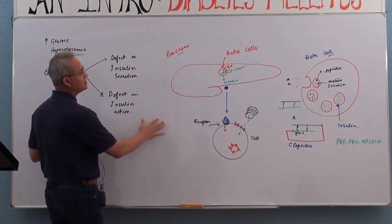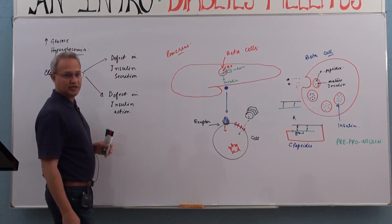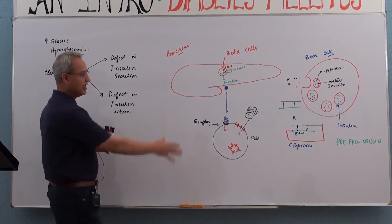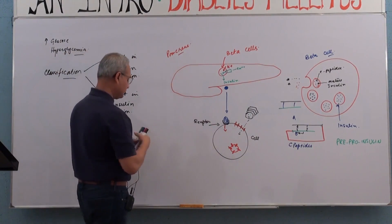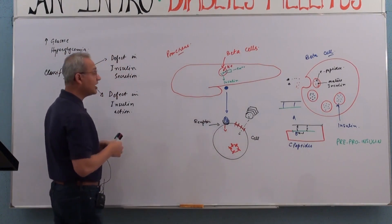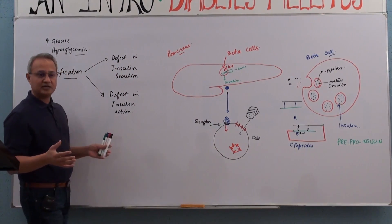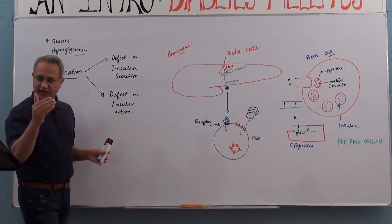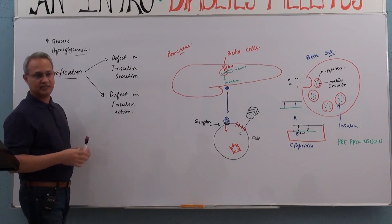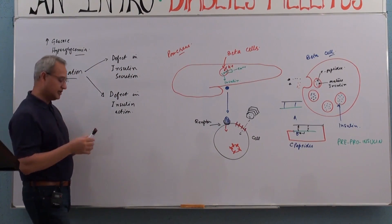Now let's look at the classification of diabetes mellitus. We have the structure in front of us. Let's see what kinds of abnormalities give rise to hyperglycemia.